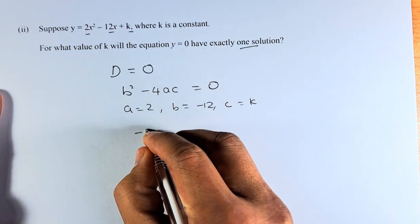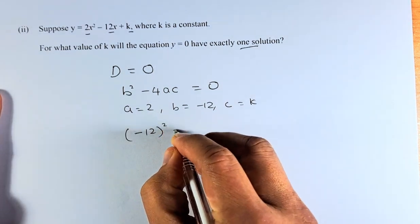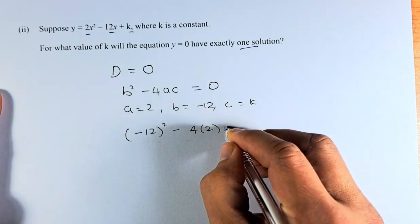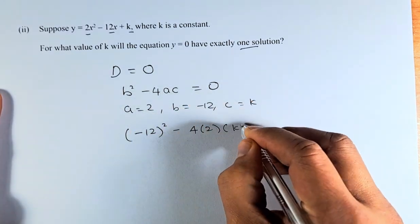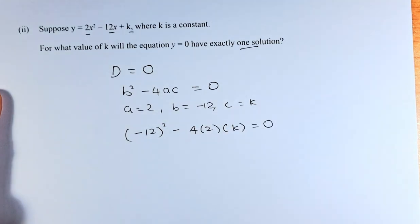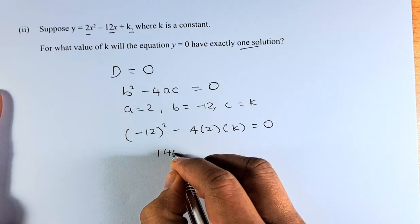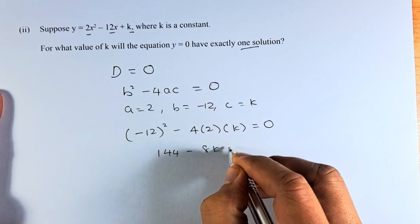So b² is now (-12)² - 4(2)(k). That must equal 0. Now we are going to solve this. So (-12)² is going to be 144 - 8k = 0.